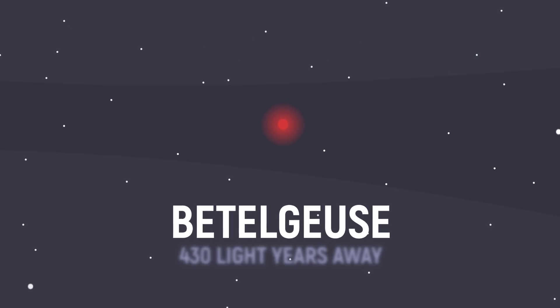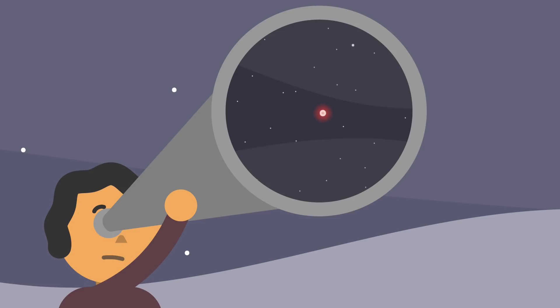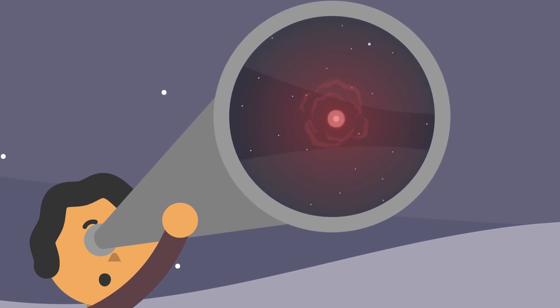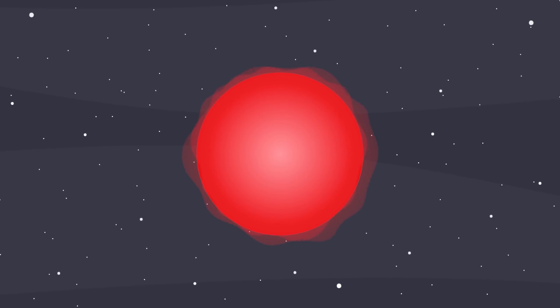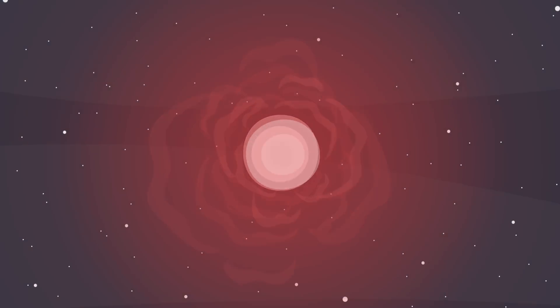we're talking about that red star located about 430 light years away. You know, the one that's going to explode in a mere million years. Yeah, scientists believe that Betelgeuse will run out of fuel, collapse under its own weight, and then burst into a spectacular supernova.